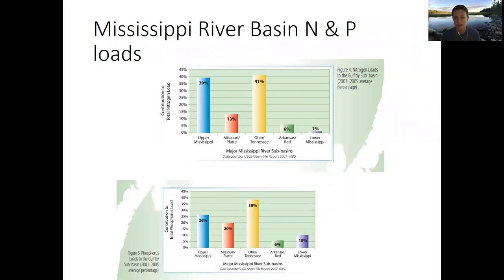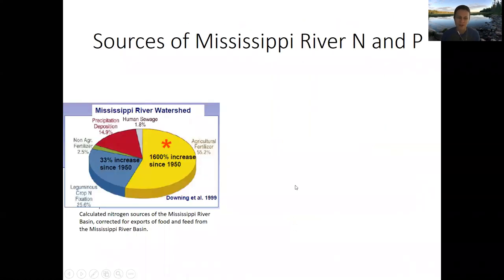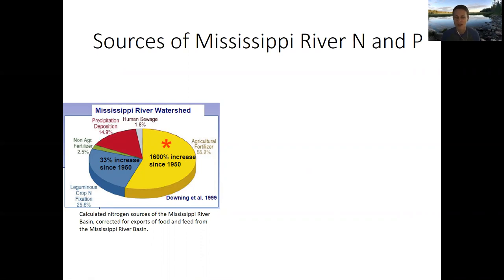In Minnesota, we are seeing that more so in the western and southwestern part of the state, whereas further north, agricultural practices aren't contributing as many nutrient loads to the system. One thing I want to highlight is the percentage increase in nitrogen loading in the Mississippi River since 1950. Because of agricultural fertilizer additions to the landscape, we've seen a 1,600 percent increase in nitrogen in our waterways — a huge amount of nitrogen that's been put out onto the landscape and is running off into our systems.